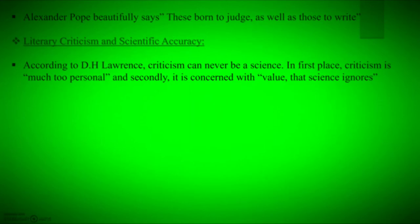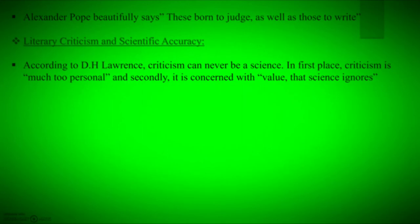Another important subtopic is literary criticism and scientific accuracy. Critics like I.A. Richards and Professor Moulton aim at scientific accuracy and scientific impartiality in their literary criticism. According to D.H. Lawrence, criticism can never be a science. In the first place, criticism is much too personal, and secondly, it is concerned with values that science ignores. So criticism can never be science — it is much too personal.